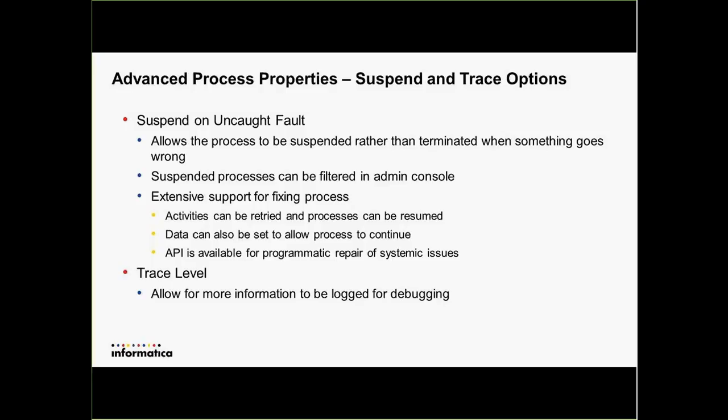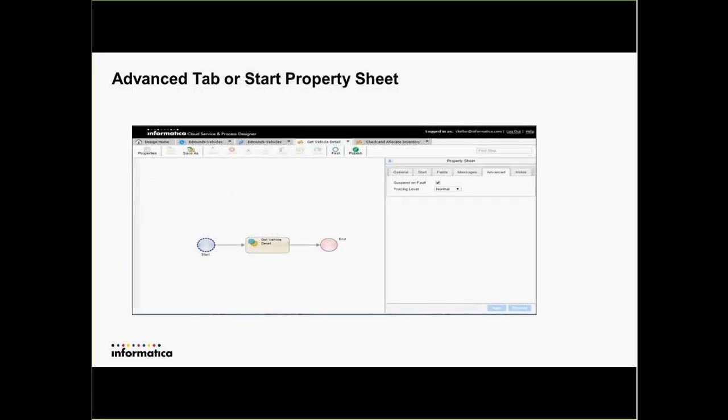In addition to this option, we also added the ability to adjust the tracing level. We had a default tracing level on web processes which normally works pretty well for debugging, but sometimes you need more information and sometimes you actually want less information to be captured associated with processes. I'll go into that as well as the suspend on uncaught fault, and I'm going to do a little demo of the suspend on uncaught fault.